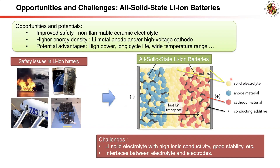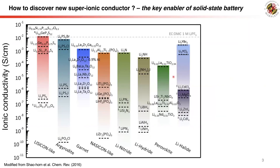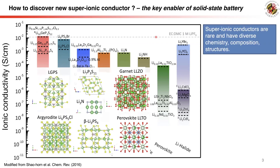A key challenge of all-solid-state batteries lies in the inorganic solid electrolyte needing to provide high lithium-ion conductivity. Compared to liquid electrolyte, only a very limited number of solid lithium-ion conductors can exhibit a similar level of ionic conductivity at room temperature. Here we show a few well-known examples of superionic conductors including LGPS, beta-Li3PS4, argyrodite, lithium nitride, lithium garnet LLZO, and perovskites — all with very different chemical compositions and structures.